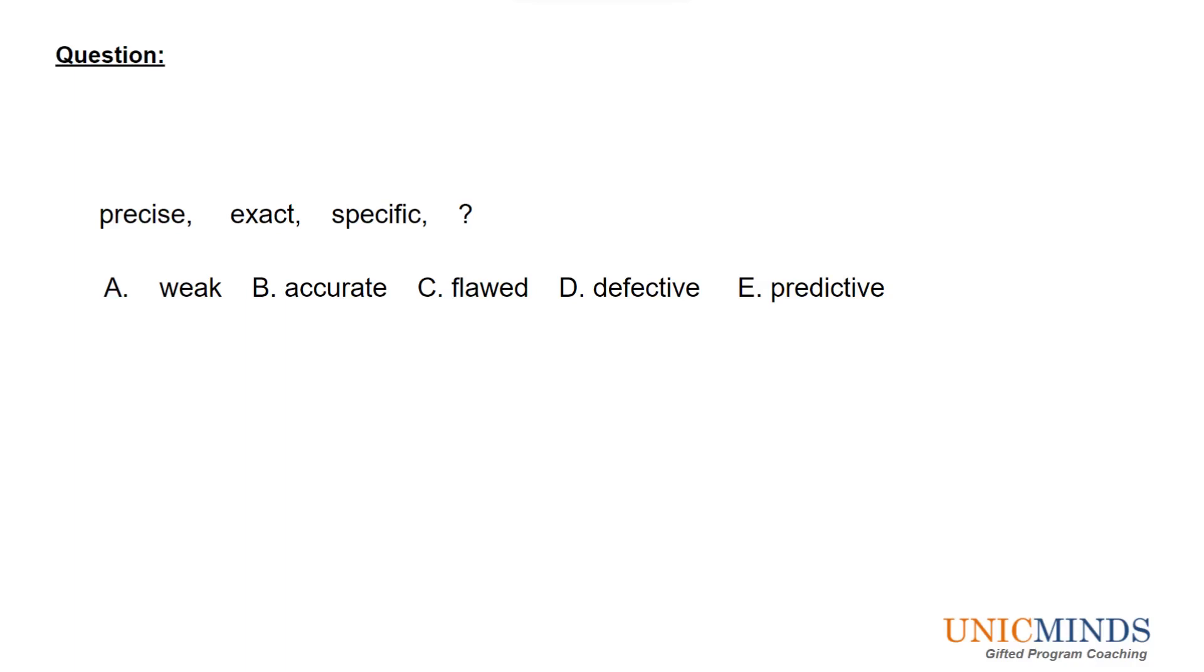This is indicating that you have to be right, you have to be correct. Or have no error. This is the intent, this is the kind of meaning in which these general pool of words are falling into. So it can't be defective, it can't be flawed, it can't be weak, it can't be predictive. So accurate is being right within a certain error margin. So that fits into this pool of words.